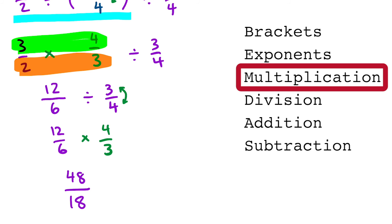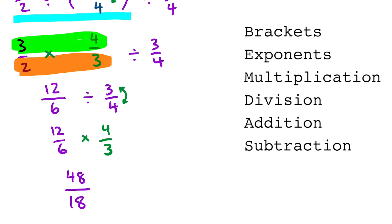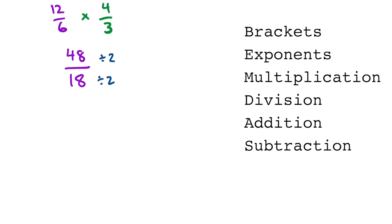We've completed our operations and now let's reduce this to lowest terms. Whenever you see two numbers that are both even, we know that they can be divided by 2. This gives us 24 on the top and 9 on the bottom. These are both multiples of 3, so we can divide the top and bottom by 3, giving us 8 over 3.